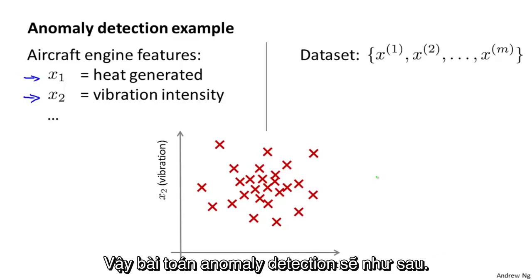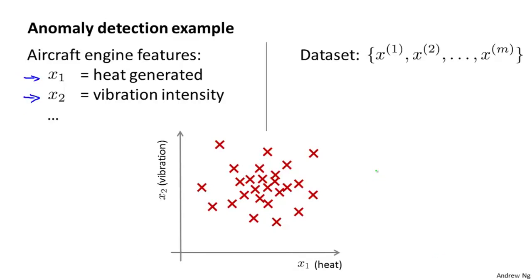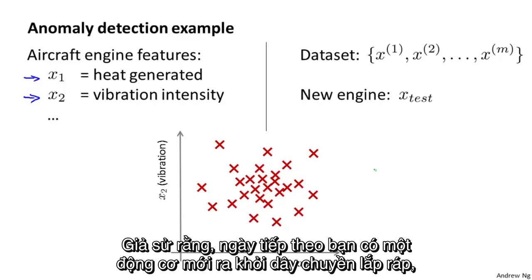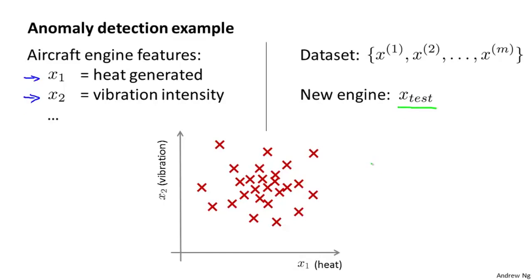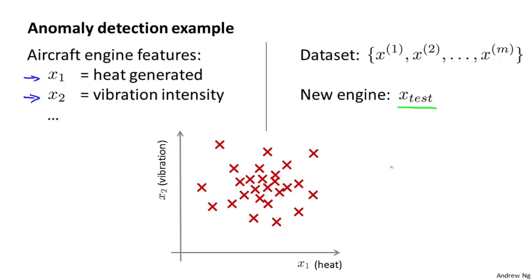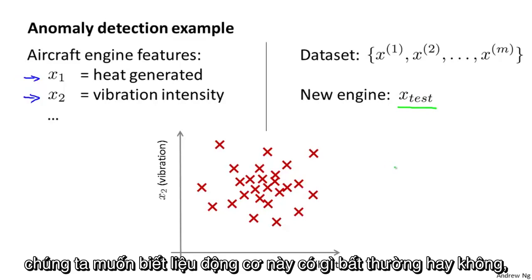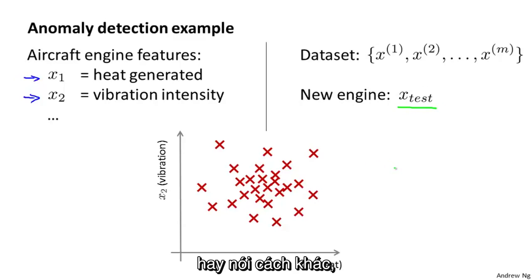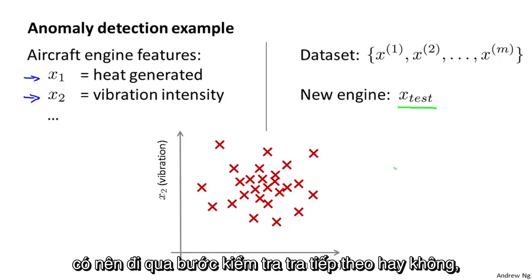So the anomaly detection problem is the following. Let's say that on the next day, you have a new aircraft engine that rolls off the assembly line and your new aircraft engine has some set of features X test. What the anomaly detection problem is, we want to know if this aircraft engine is anomalous in any way. In other words, we want to know if maybe this engine should undergo further testing.